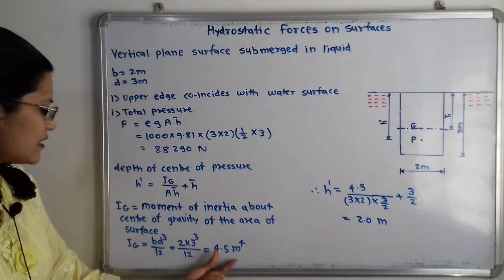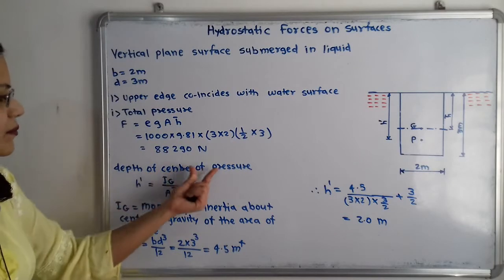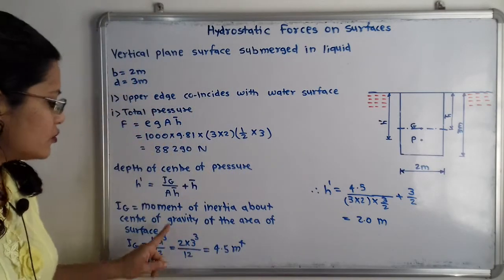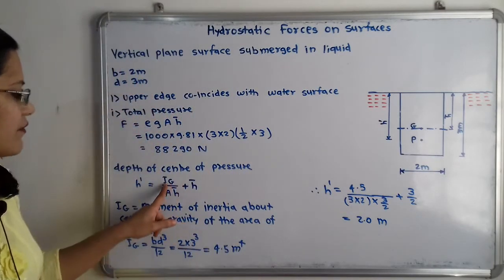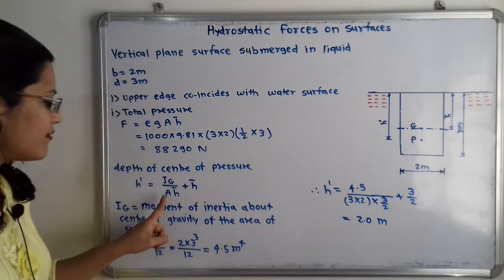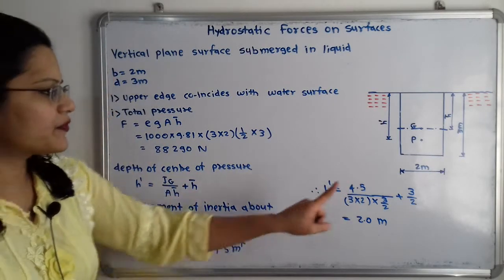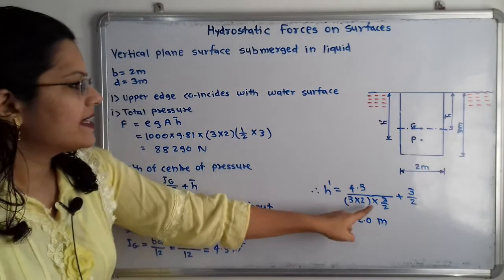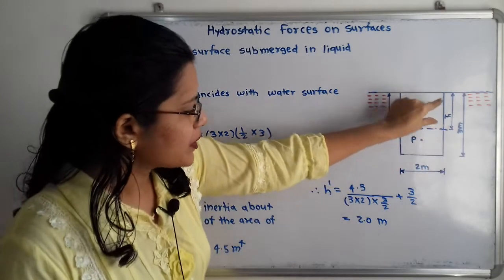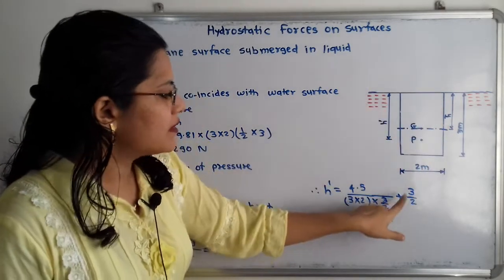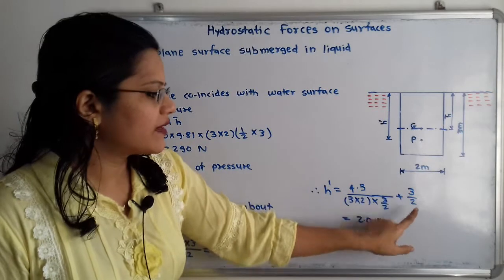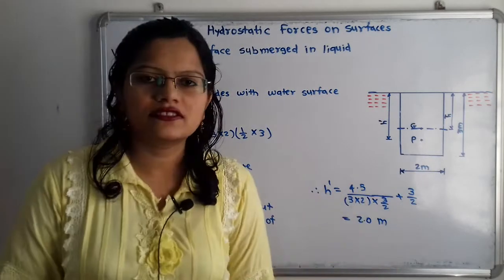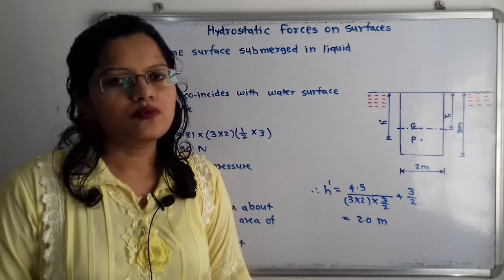Using Ig = 4.5 m⁴, we calculate h' = 4.5 / (A × h̄) + h̄ = 4.5 / (3 × 2 × 3/2) + 3/2. Solving this gives the depth of center of pressure h' = 2 meters.